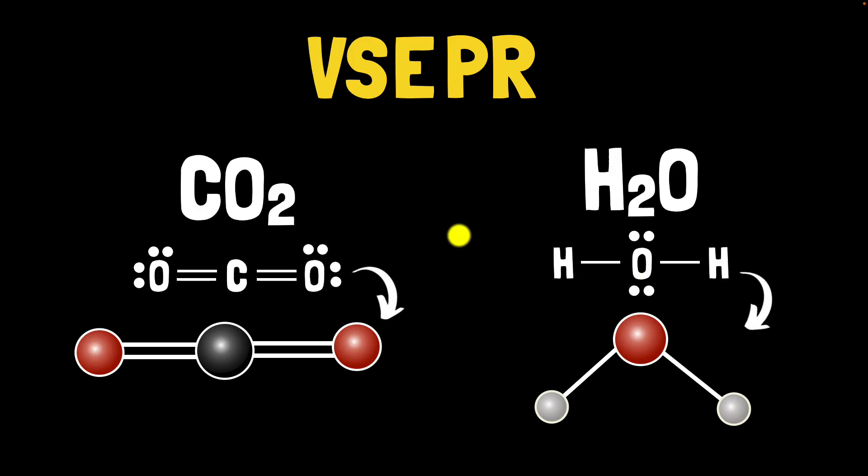Let's begin with an example. Say we have methane. Its Lewis structure is given this way. Remember, the Lewis structure does not give us the shape of the molecule — that's what we want to figure out. VSEPR says to look at the central atom, which in this case is carbon, and count the number of electron groups around it.